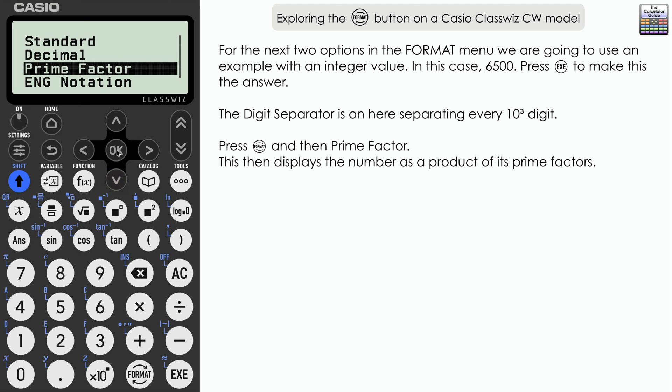So let's select that. And you can see here that it's broken into prime factors or a product of prime factors 2 squared times 5 cubed times 13. So the number is given there as a product of its prime factors, which may be useful to you to answer various questions. Let's return to format.